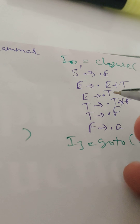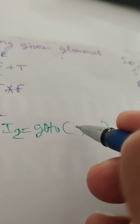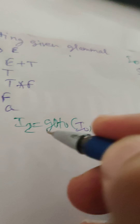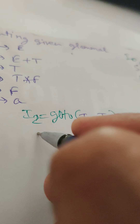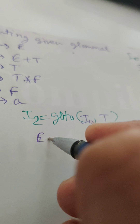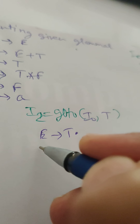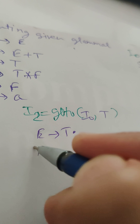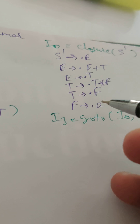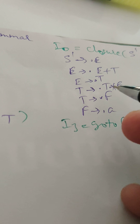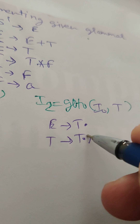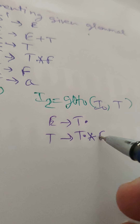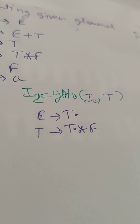Next is I2, the GOTO of I0 on T. We get E → T. (finished here), and from T → T.*F we get T → T.*F, where after the dot is the terminal star.